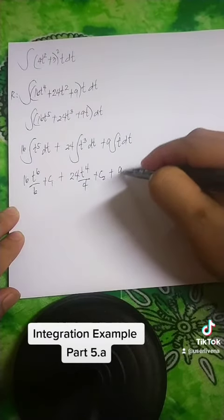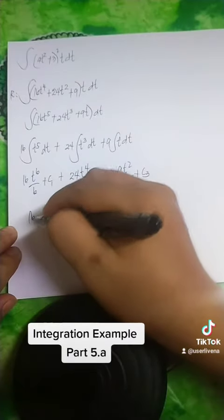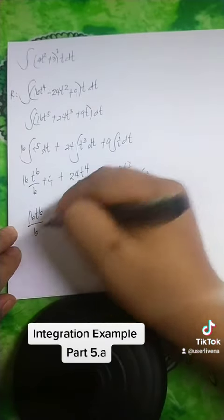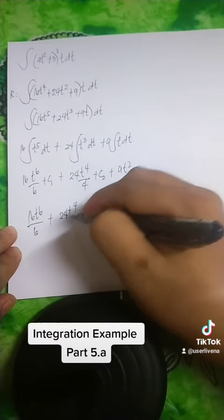Plus 9t squared over 2, plus c sub 3. So you've got here 16t to the 6th over 6 plus 24t to the 4th over 4.